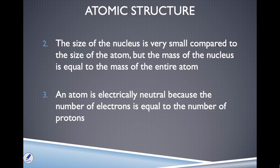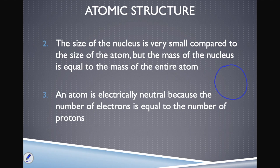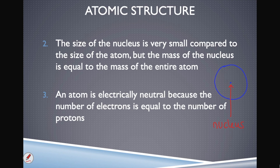If we draw an atom as a circle with the nucleus right in the middle, we can see that the nucleus is tiny compared to the whole atom. The nucleus contains our protons and neutrons. The space outside the nucleus — while it looks empty — is where electrons are on the move in their set energy pathways, as Bohr described.